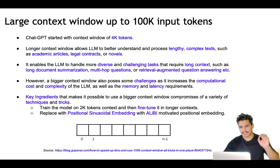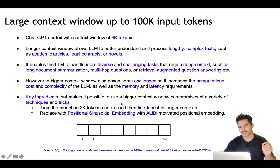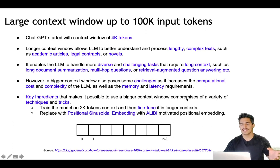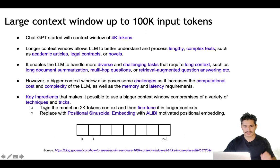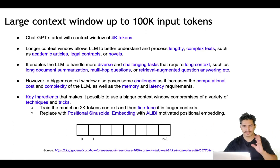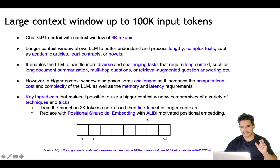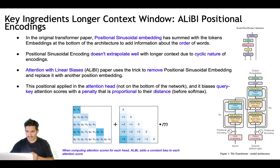So how can a large context window still be achieved? Key ingredients that make it possible include a variety of techniques and tricks. The first trick is to train a model on 2k tokens only and then fine-tune it on longer context. The second trick is to replace the positional sinusoidal embeddings with ALiBi-motivated positional embeddings.